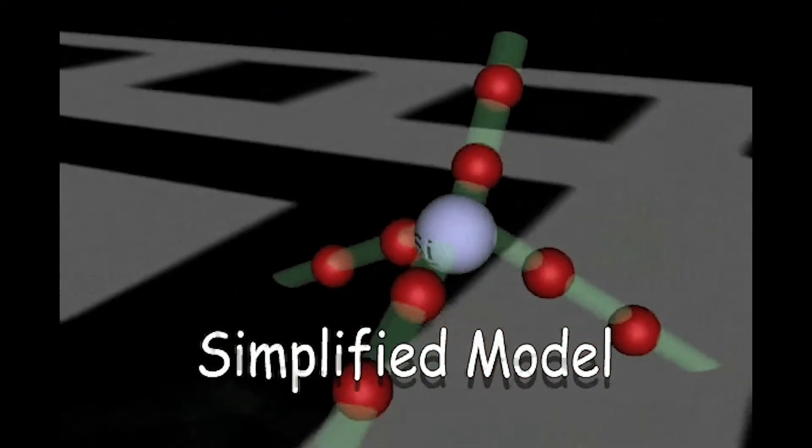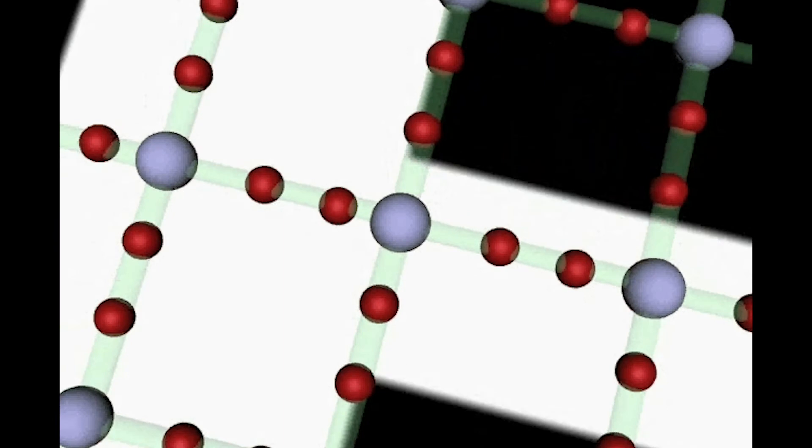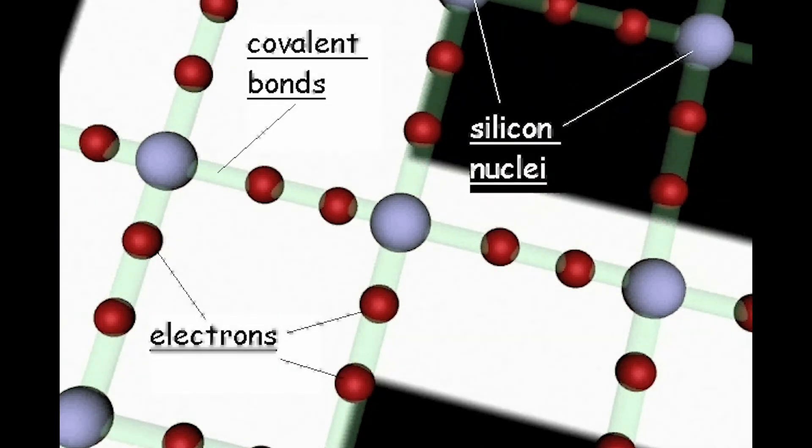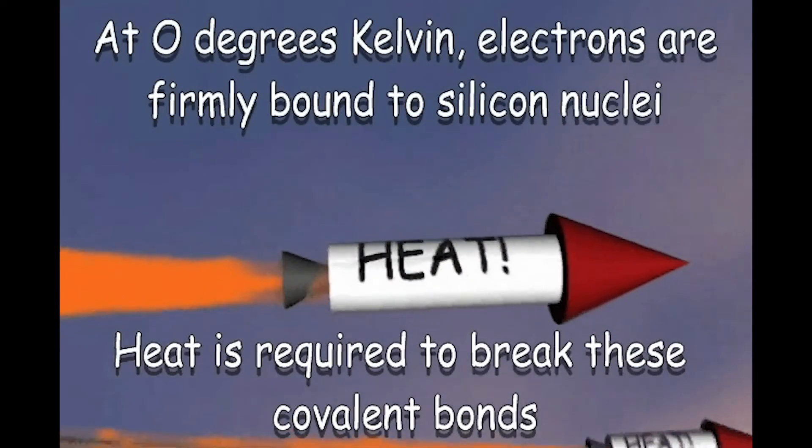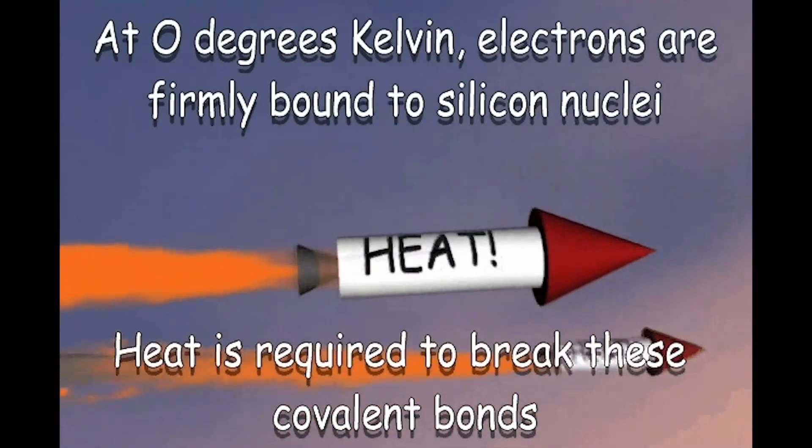Let's simplify the model to make it easier to understand. At absolute zero, the electrons are strongly bonded to their parent nucleus.